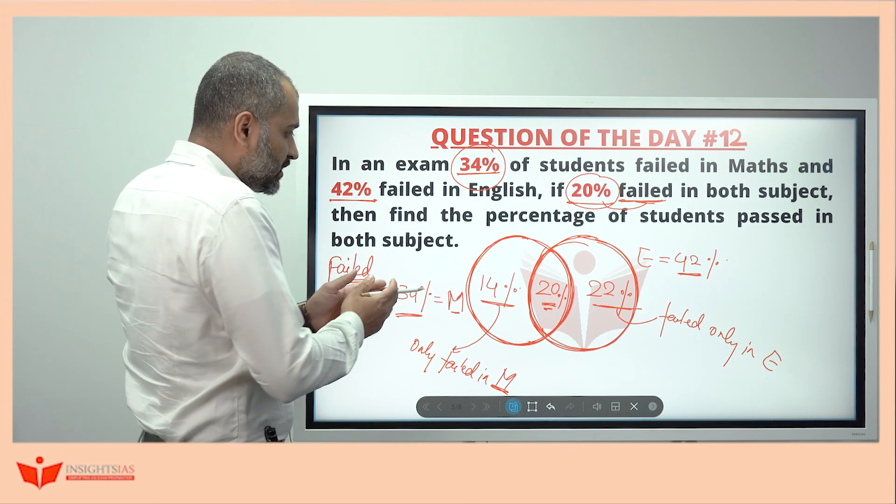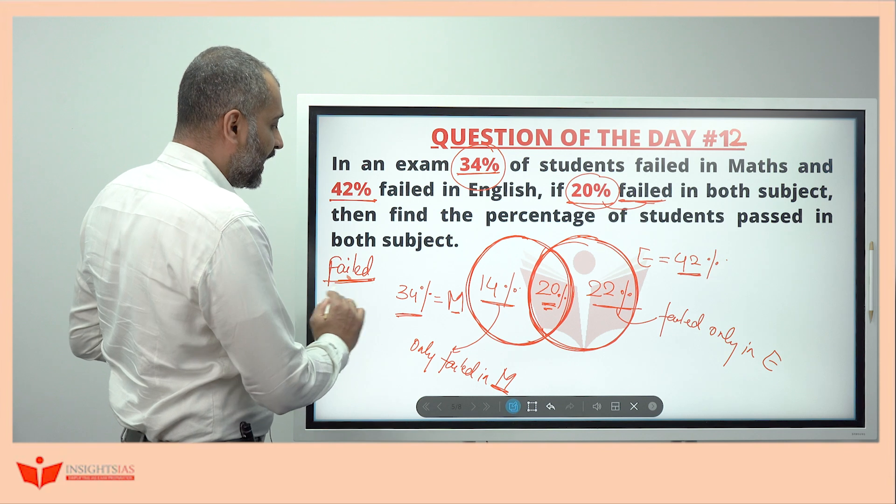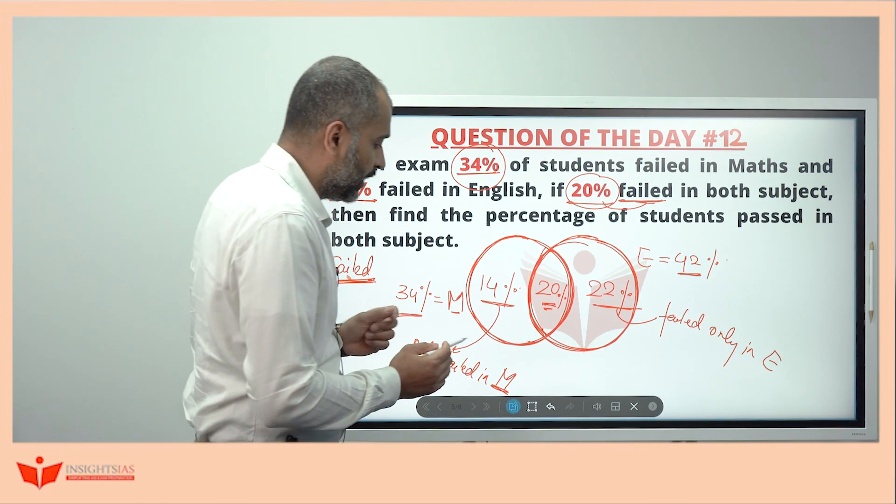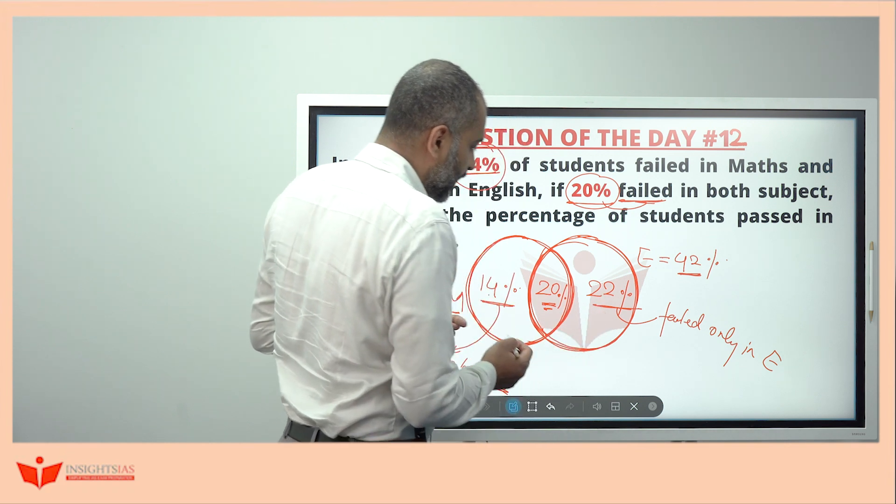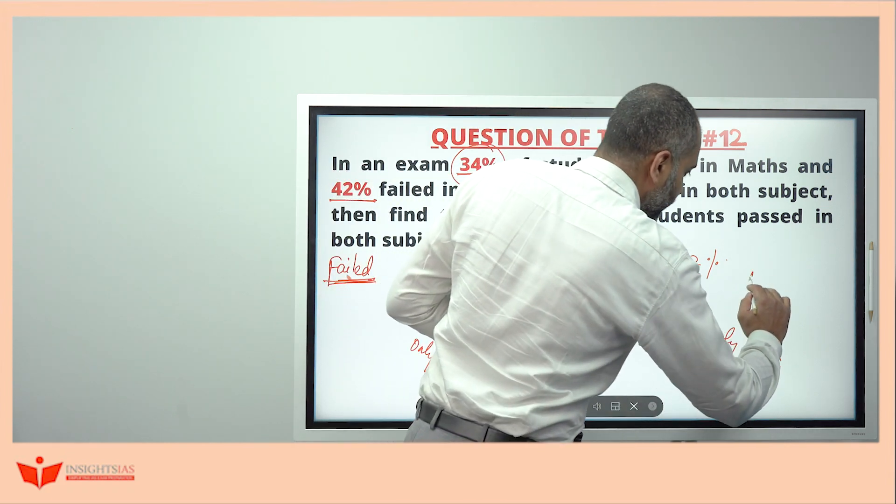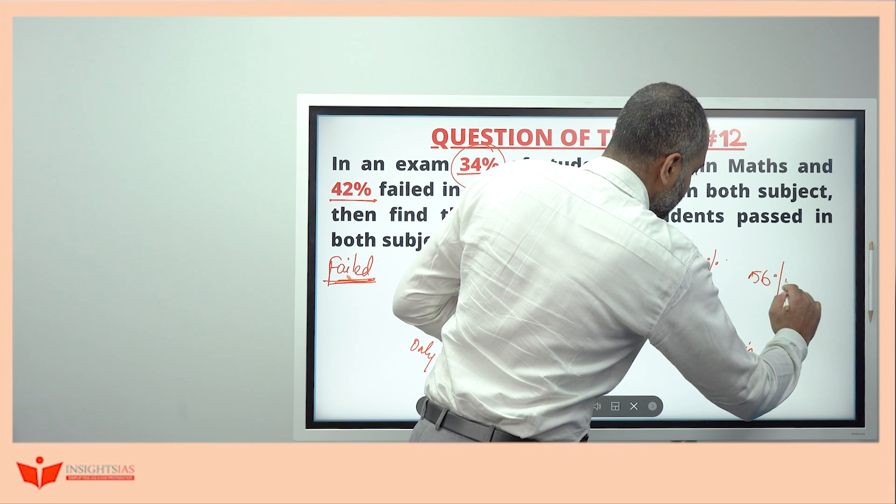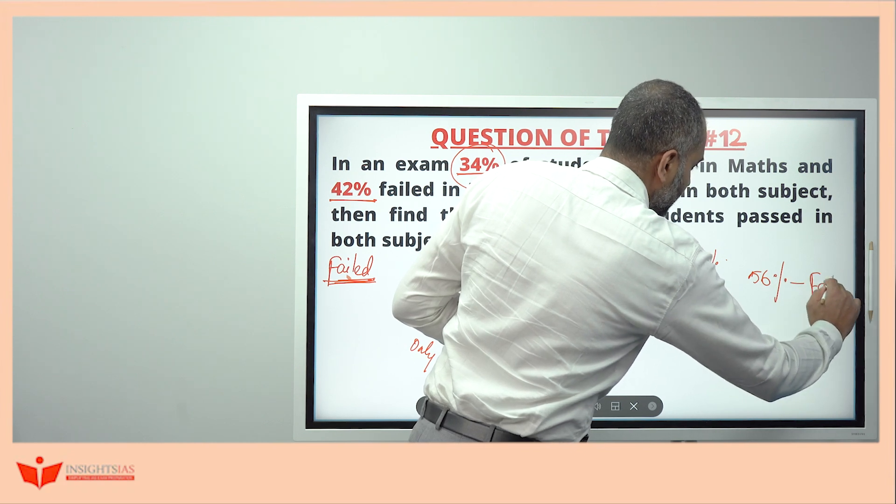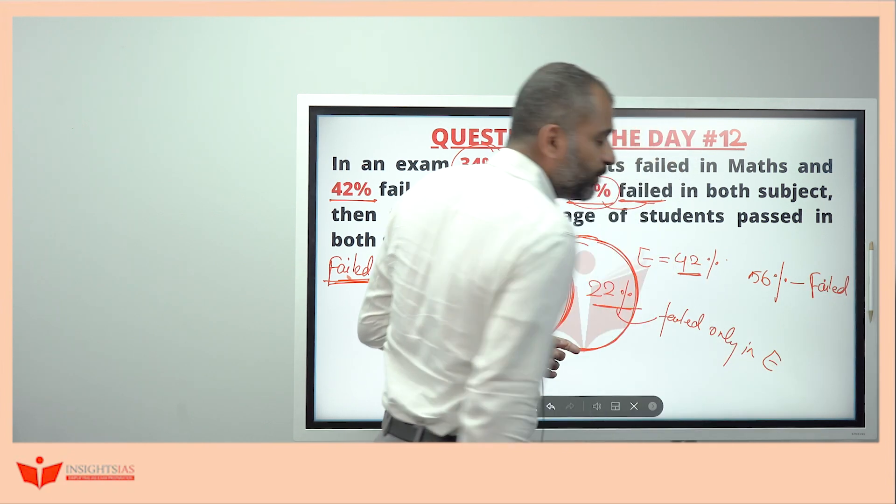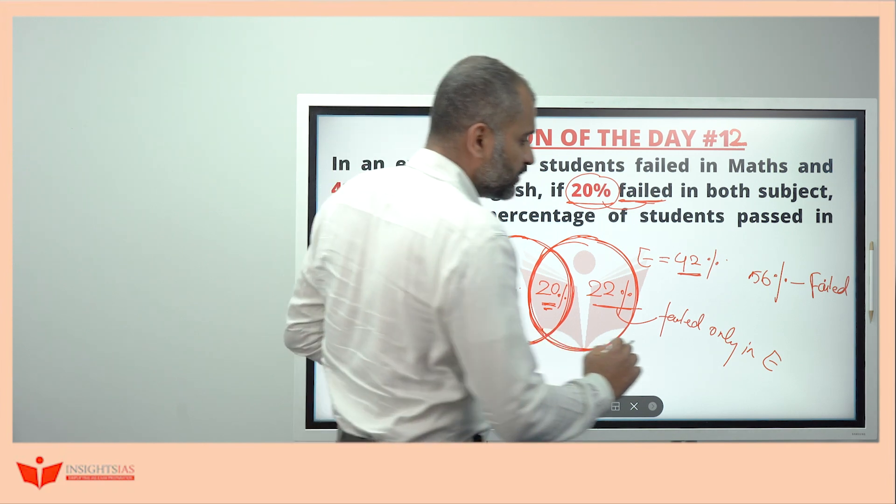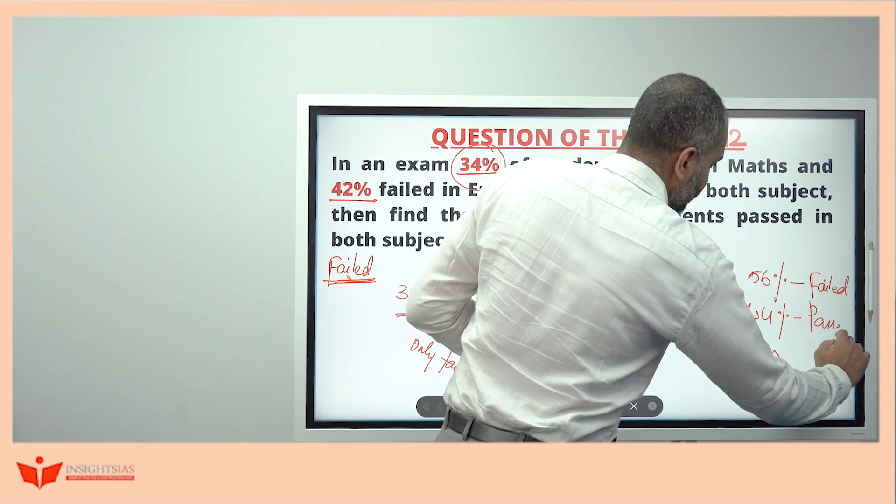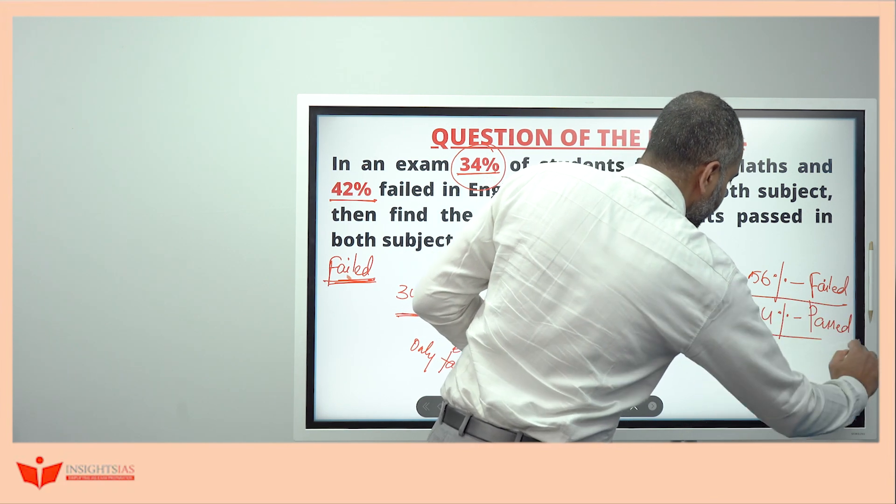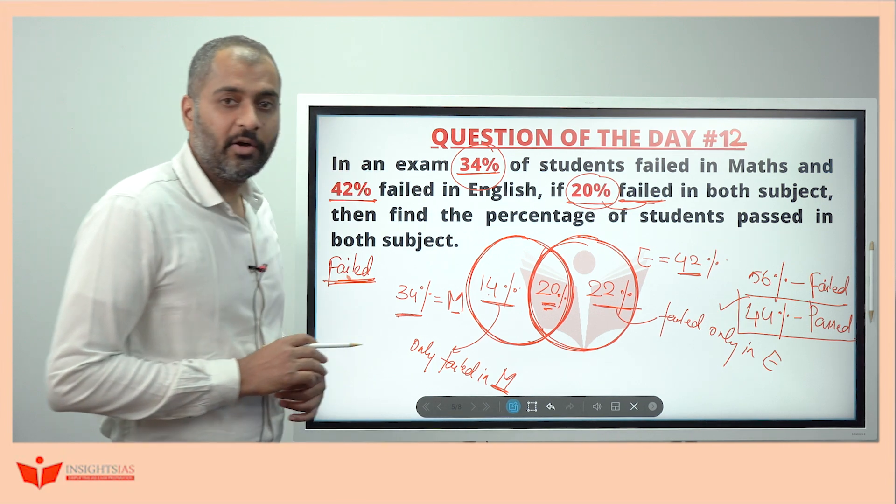This is the data of all the failed candidates. If I add 14%, 20%, and 22%, this is nothing but 56%. 56% are failed. If 56% are failed in a class, what is the percentage of passed? 44% passed.